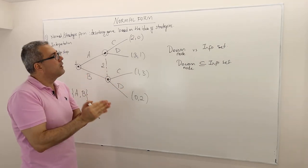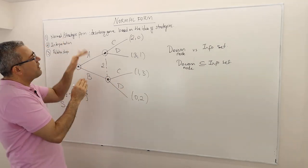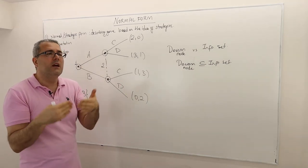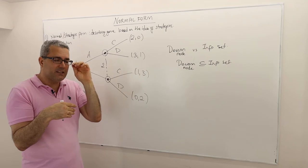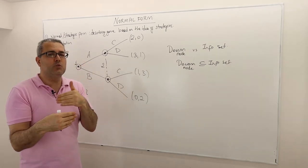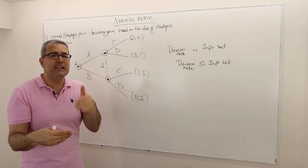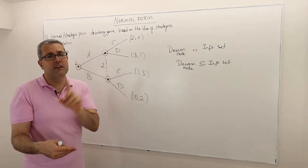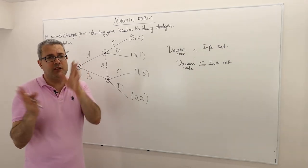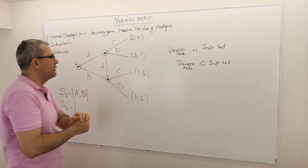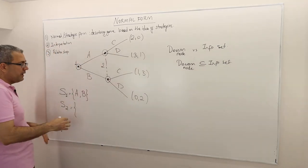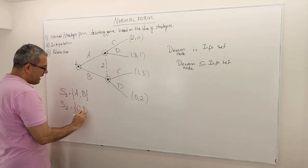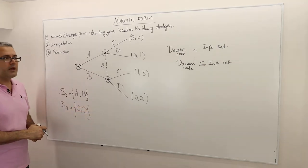Since player two will never be informed about where exactly he is, all he knows is that it's his turn to choose. So he has to say 'I'm going to choose C' or 'I'm going to choose D.' Therefore, when we define strategy — strategy is a complete contingency plan — it tells us what action players will take at every single information set, and for one info set there should be just one action. That means there are two strategies for player two: C and D.